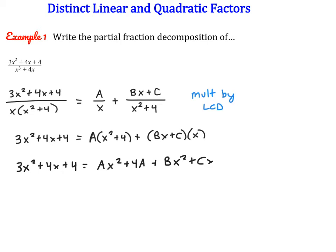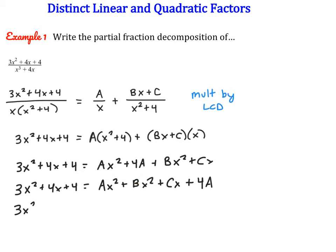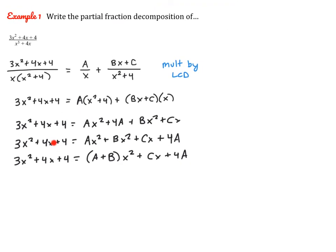Then I group these in descending order: x squared terms first — ax squared plus bx squared — then the x term, which is cx, then the constant term last. I'm also going to factor out x squared to group the x squared terms together, giving us a plus b times x squared, plus c times x, plus 4a. Now I have a quadratic equation equal to a quadratic equation. If they are equal, all of the parts should be equal: coefficients of x squared equal each other, coefficients of x equal each other, and constants equal each other.